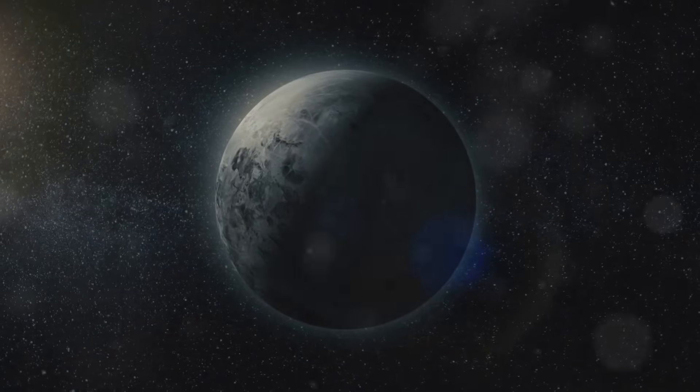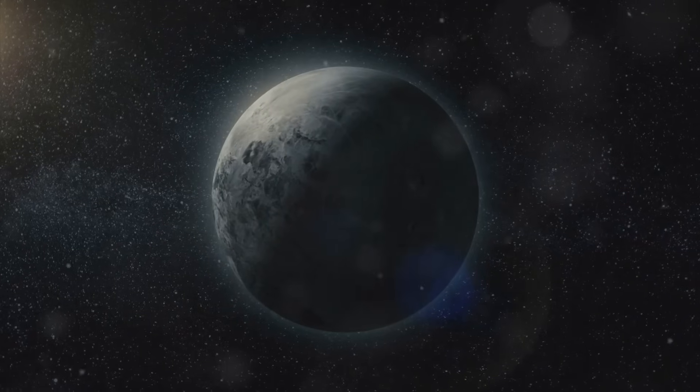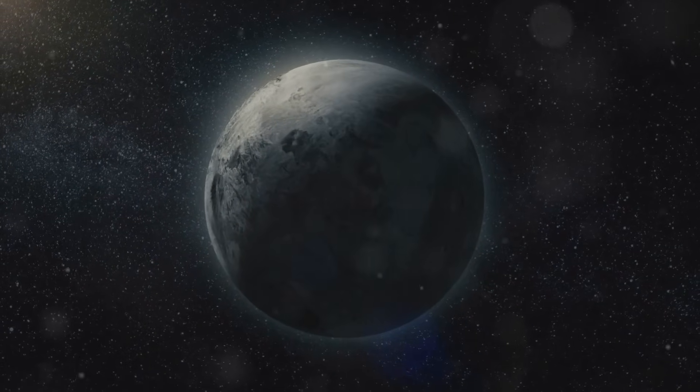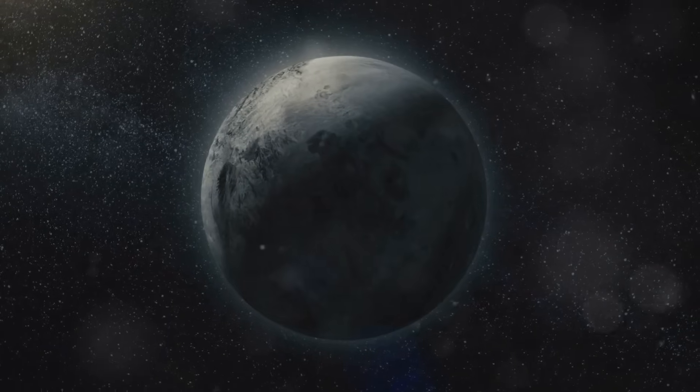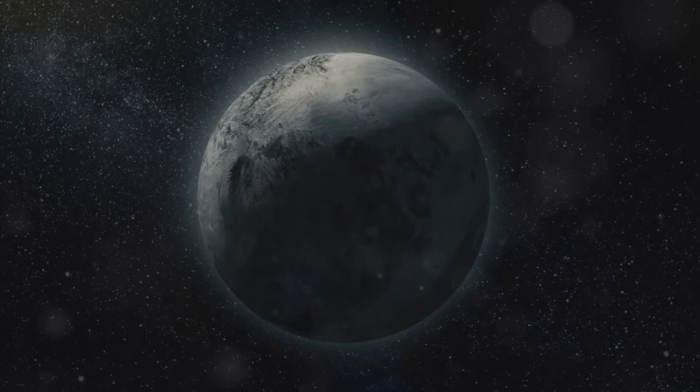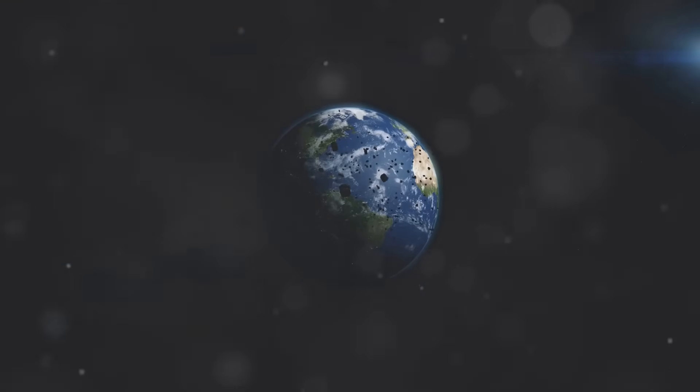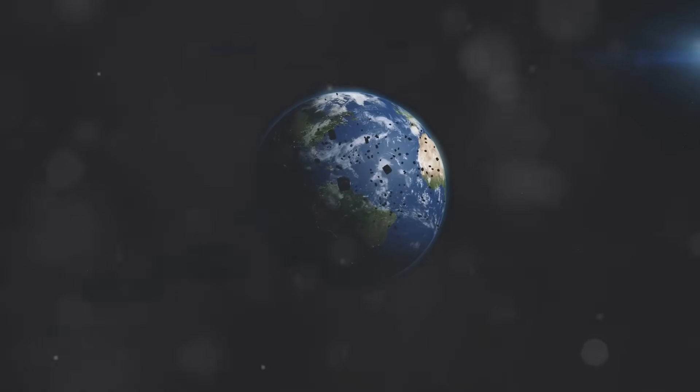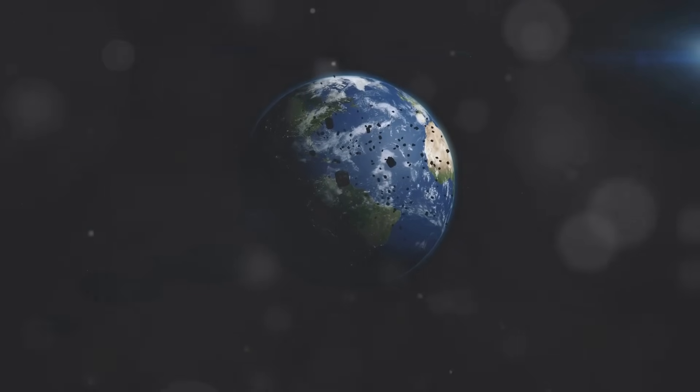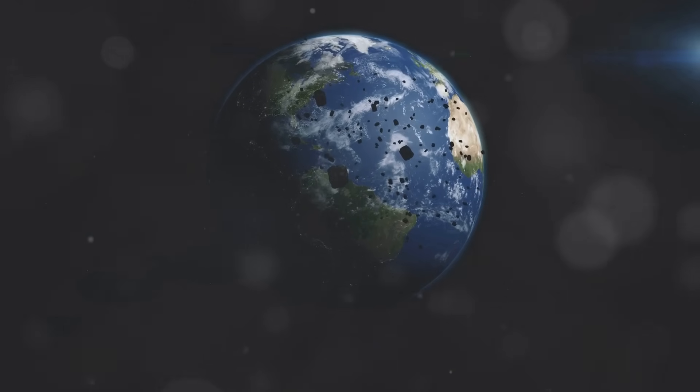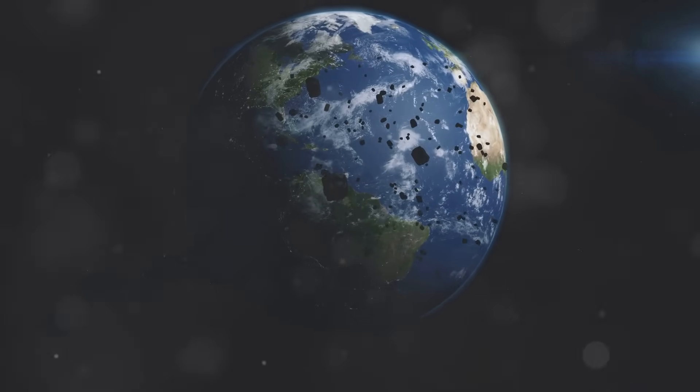This perfect balance of conditions makes Earth a unique haven for life in our solar system. The combination of the right distance from the Sun, a protective atmosphere, and abundant water creates an environment where life can flourish. While other planets in our solar system have their own fascinating characteristics, none offer the same hospitable conditions as Earth. Our planet's unique blend of factors makes it a rare and precious gem in the vast expanse of space.